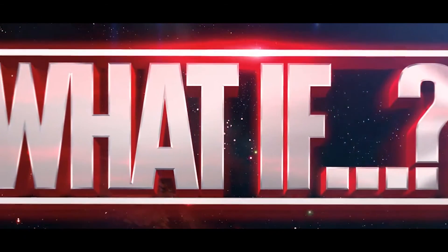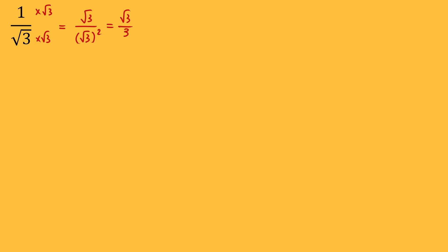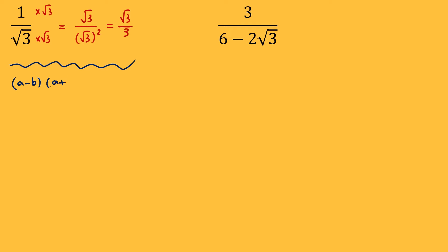Now, what if we have a fraction with two terms in the bottom? For example, 3 over 6 minus 2 root 3. How can we rationalize the denominator of this fraction? The idea is to apply the difference of two squares identity. When we have (a minus b)(a plus b), we're going to get a squared plus ab minus ba minus b squared, so the middle terms cancel out, and we get a squared minus b squared. So if we multiply two conjugates, we get the first term squared minus the second term squared.